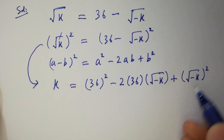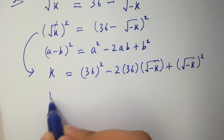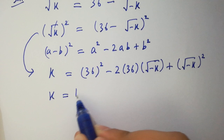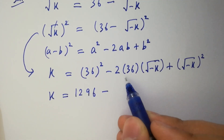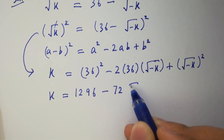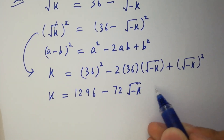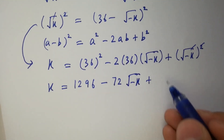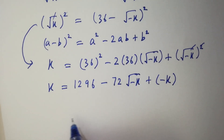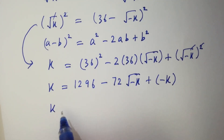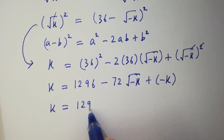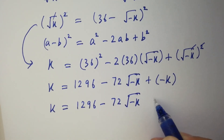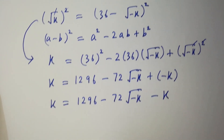In the next step, k equals 36 times 36, which is 1296, minus 2 times 36, which is 72, times square root of minus k, and here the square cancels from square root giving us minus k. So k equals 1296 minus 72 square root of minus k plus minus k.